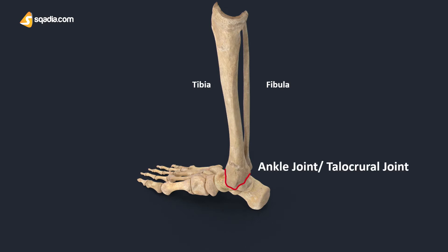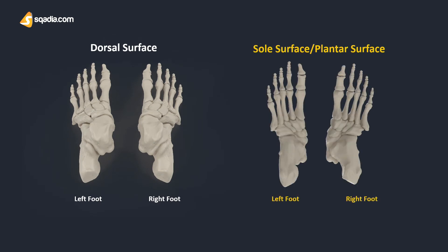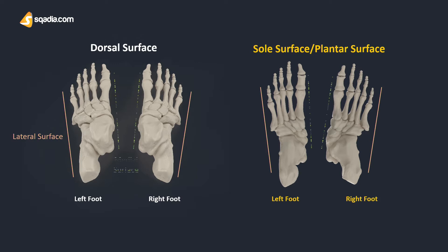The tarsal bones have four surfaces. The dorsal surface, which is the top of the foot. The plantar surface, which is the ground or sole surface. The lateral surface, which is towards the little toe or away from the body. And the medial surface, which is towards the body or the big toe.